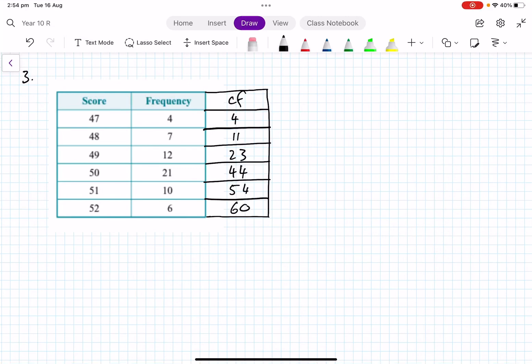Here we have a slightly different one. We've got a frequency table. So what I've done is you've given the scores from 47 to 52 and then the frequencies. I've added in a cumulative frequency which is adding each successive one.